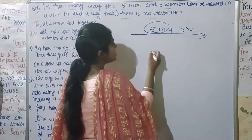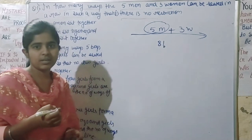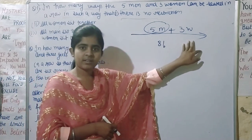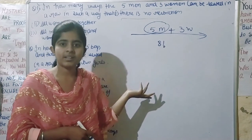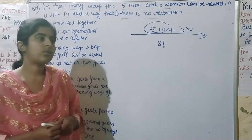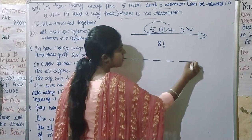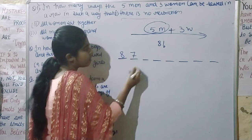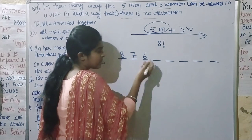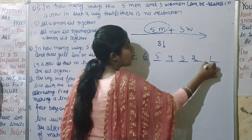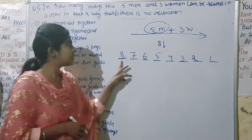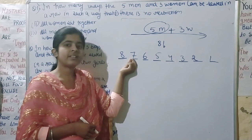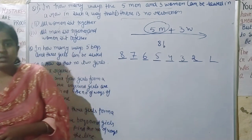So 5 plus 3 will be 8, and the answer is 8 factorial. There is no restriction, so anyone can be placed in any position. For 8 seats: position 1 has 8 choices, position 2 has 7, then 6, 5, 4, 3, 2, 1 — giving 8 factorial.